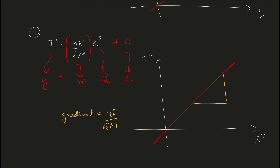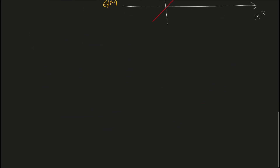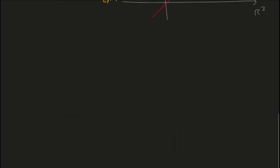So the gradient of this line equals 4π²/GM. If I remember correctly, the question was to find the mass of the planet or star at the center. Since you know 4π² and G, you can find the gradient of the graph, set it equal to 4π²/GM, and solve for the mass of the planet or star.